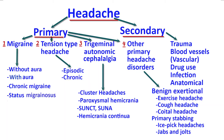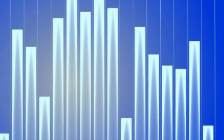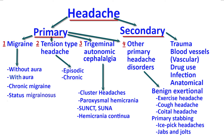Hemicrania continua also belongs to this group. It is a type of headache that affects one side of the head, lasting for over three months, and can wax and wane in intensity — usually a throbbing, pulsating pain on one side of the head.